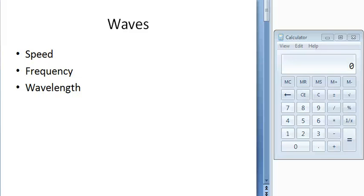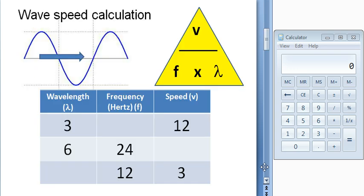Welcome to a screencast on waves and specifically calculations relating to speed, frequency, and wavelength. If we get a calculation like this, what will happen is we'll be given two out of those three parameters. So here's an example here.